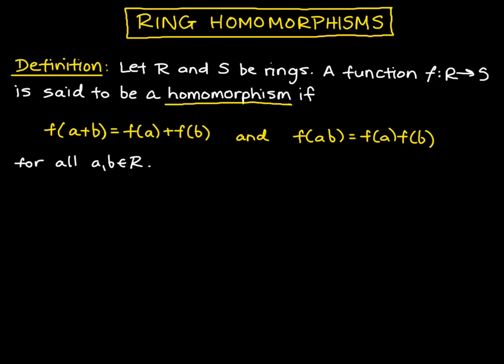That is, for any A and B in the ring, f of A plus B is equal to f of A plus f of B, and f of A times B is equal to f of A times f of B. What a homomorphism is doing is showing that addition in R behaves the same way as addition in S. Similarly, multiplication in R behaves the same way as multiplication in S under this mapping.